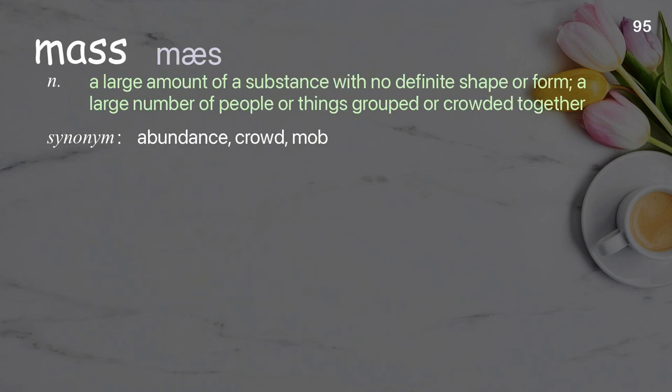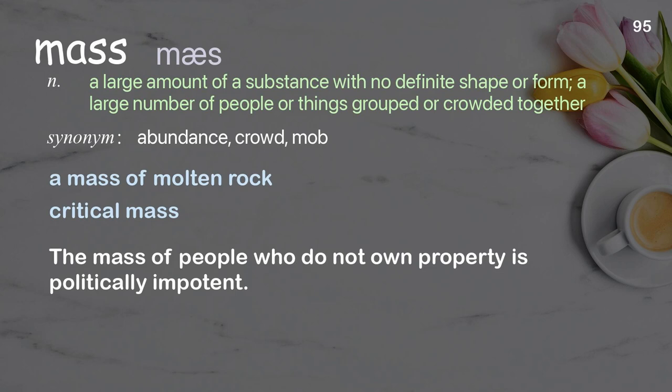Mass: a large amount of a substance with no definite shape or form; a large number of people or things grouped or crowded together. Examples: a mass of molten rock, critical mass. The mass of people who do not own property is politically impotent.